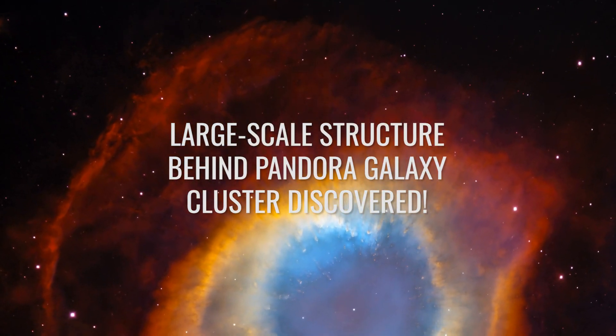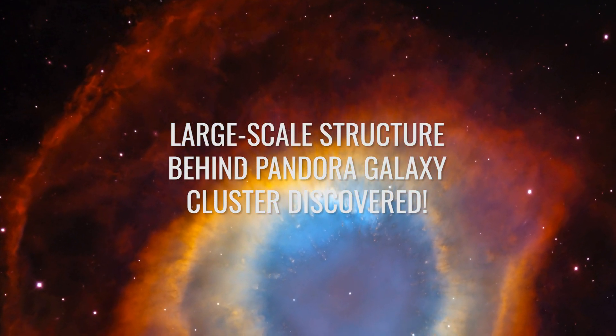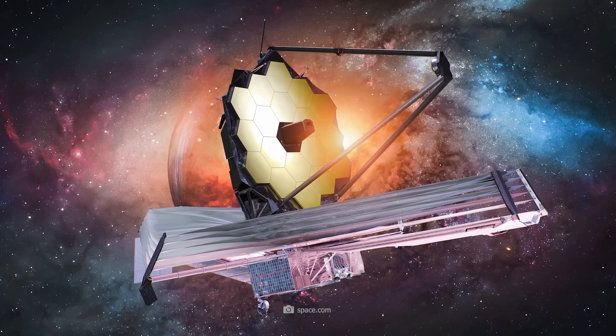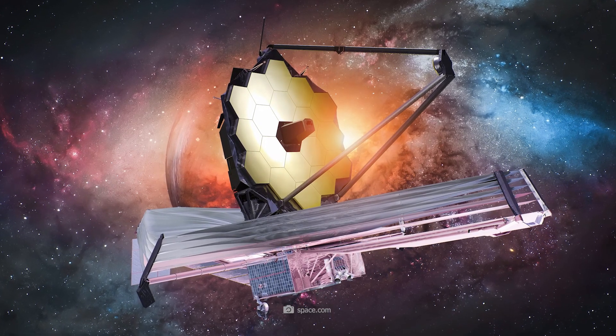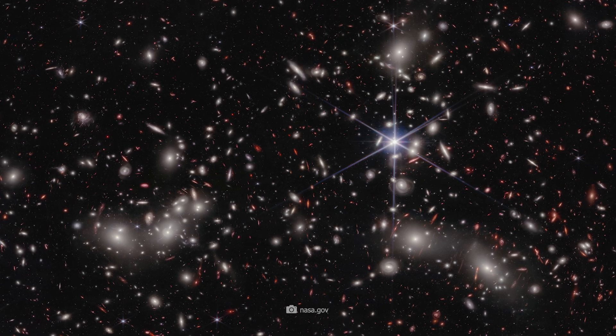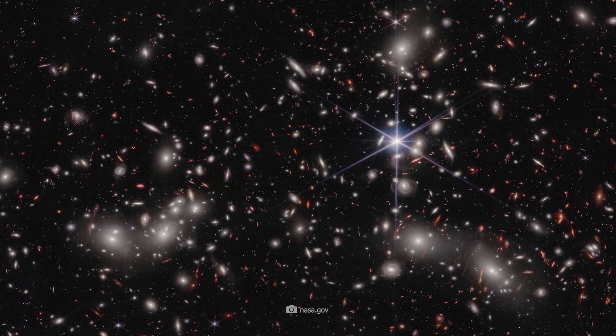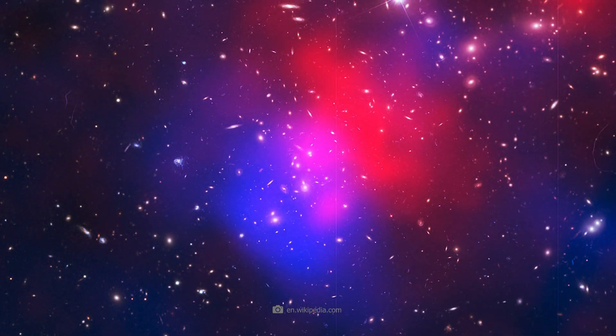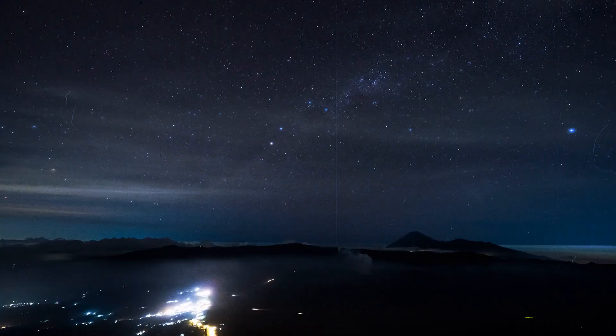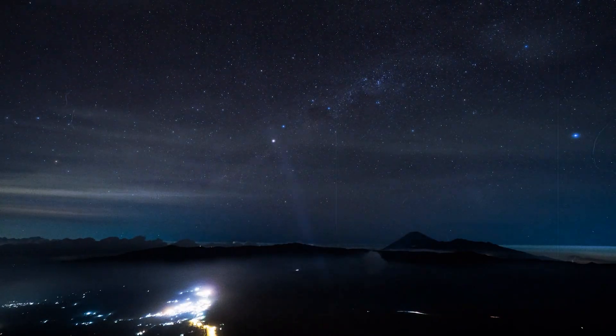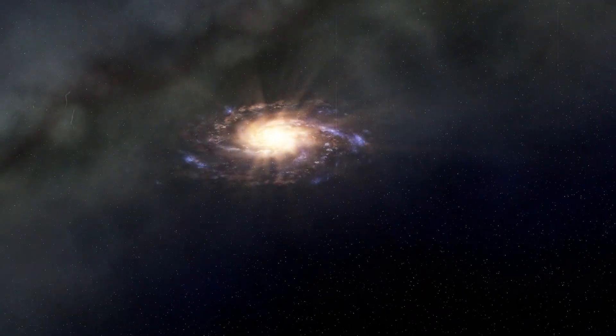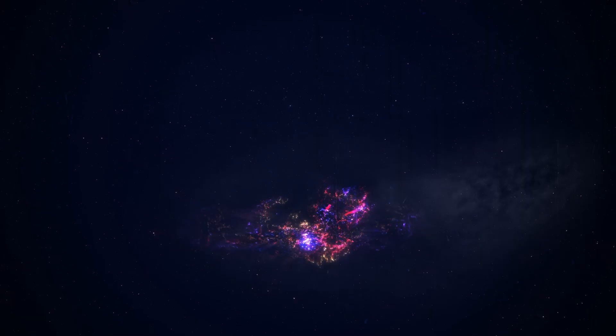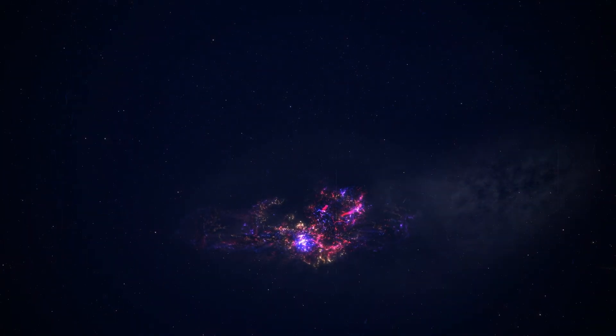Large-scale structure behind Pandora Galaxy Cluster discovered. James Webb did it again. In spring 2023, Webb took another deep image. This time, the image shows the Pandora Galaxy Cluster. Behind the cluster of galaxies, old galaxies and stars come to the fore again due to the gravitational lensing effect. Scientists have already become accustomed to the sight of very old and actually impossible galaxies, but this image showed something else. A gigantic structure appears to be located behind the cluster.